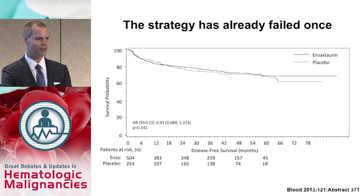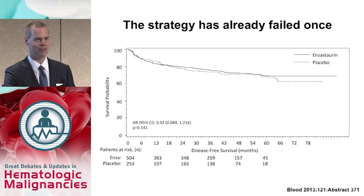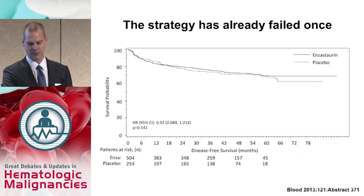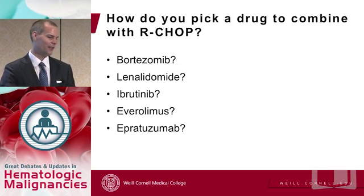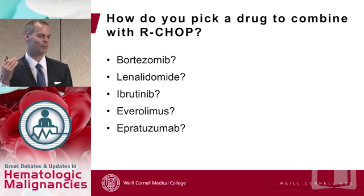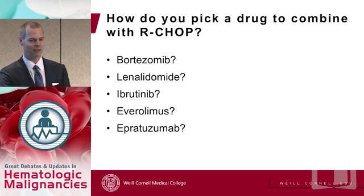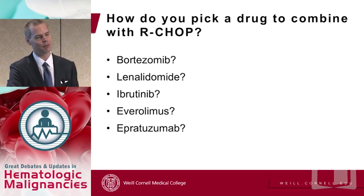The strategy of using cell of origin has already failed once — the enzastorin study, a PKC beta inhibitor important in the ABC subtype, using enzastorin maintenance after R-CHOP failed. And even if you want to use something, how do you pick? Do you pick bortezomib for the preclinical data and cost? Lenalidomide because it has the most clinical data? Ibrutinib because it's oral and better tolerated? We don't know, and it would be very hard-pressed to say exactly how differently you should treat these patients.